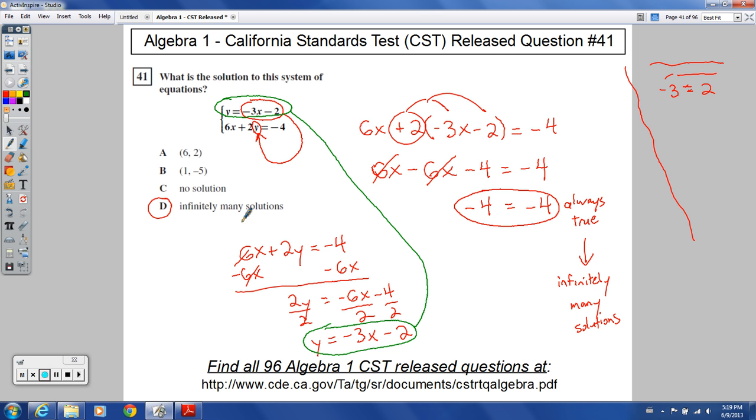And so, any way you think of it—graphically, putting both of them into slope-intercept form, or using substitution to see that something always equals itself—any one of those three ways will give you choice D as your final answer for 41.